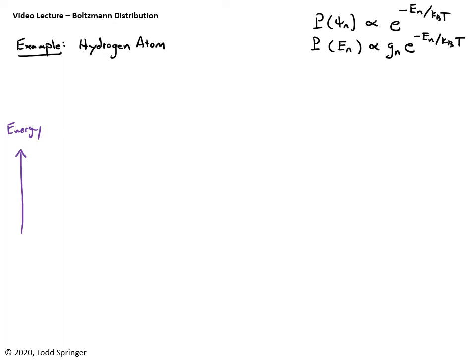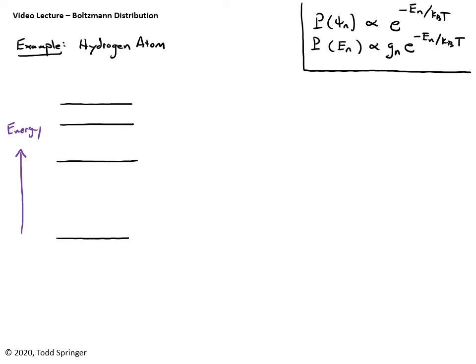We've worked out these relationships for the probability that an atom is in a particular state ψ_n, or the probability that the atom has energy E_n, given by the formulas in the corner. Let's focus on a particularly useful example: the hydrogen atom. Maybe you're familiar with the energy levels of a hydrogen atom — let me draw some of them out here, not to scale.